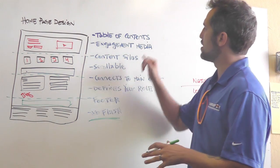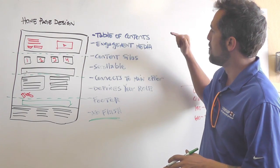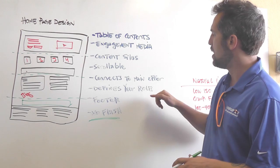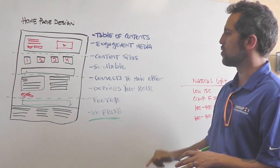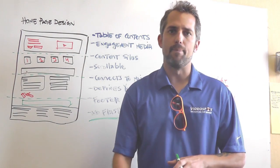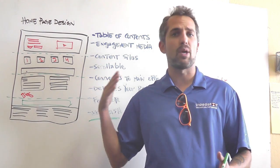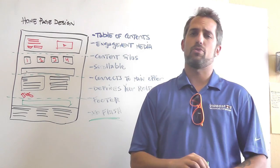But you know, it doesn't just mean the web language. It also just means like the bells and the whistles, you know, you just don't need a ton of that stuff on your homepage. You really need to focus on these other things: have a table of contents, have engagement media, content silos, make it scrollable, connect to your main offer. It should define your role and you should have a footer, so that people can find you and contact you easy. If they don't want to opt in, but they want to call you and buy, give them that opportunity.